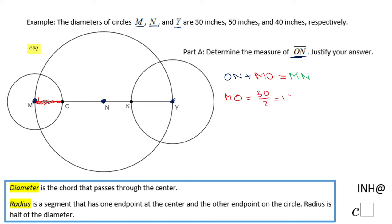And also now we want to look at MN. MN is this segment which is the radius of circle N, so MN will be half of the diameter of circle N which is 50 inches.